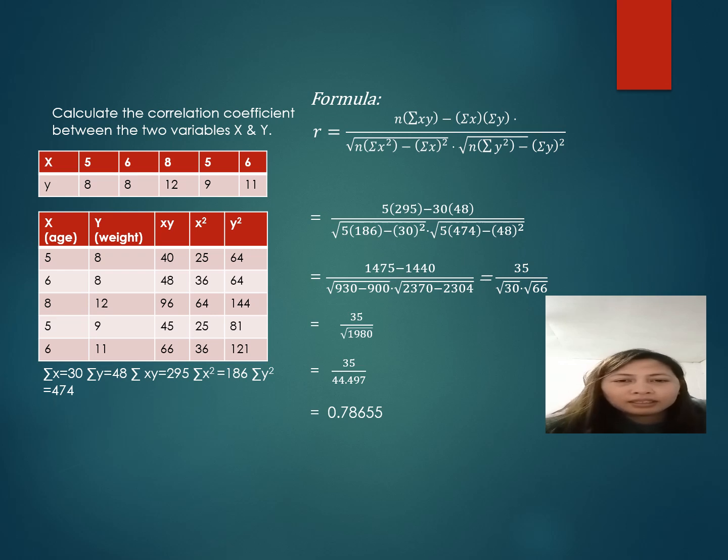After that, we add each column to get the summation of x, summation of y, summation of x squared, and y squared. And this is the formula and the solution.